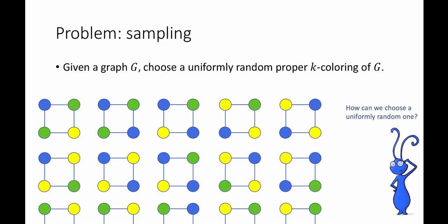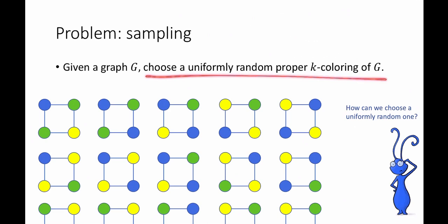The problem that Markov chain Monte Carlo addresses is the problem of sampling. That is, how do we sample from a particular distribution? Just as an example, suppose that we're given a graph G, and we want to choose a uniformly random proper K coloring of G.